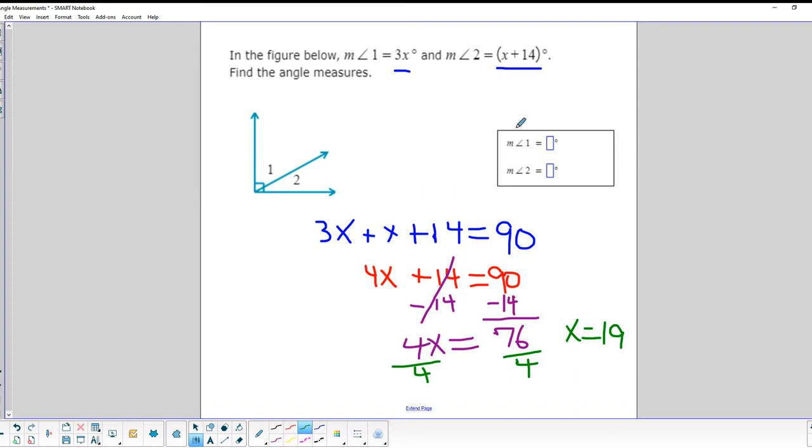Well, we're not quite done yet, because we know that measure of angle 1 up here is 3x. So we're going to have 3 times 19 in order to find out what that equals. 3 times 19, 3 times 10 is 30, 3 times 9 is 27. So that's going to equal 57 degrees. Now at this point, we could actually just subtract this number from 90 to find angle 2. Or we could come down here and say, okay, x is 19. So 19 plus 14 will give us our angle measure as well. That's 29, 30, 31, 32, 33. So 33 degrees. So that's our two angles, 57 and 33 degrees.